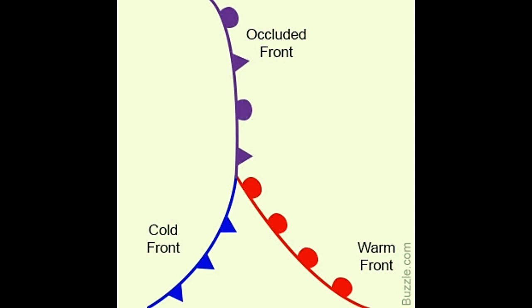How does an occluded front form? Usually an occluded front is formed in areas of depression caused by low pressure. When a cyclone develops behind a warm front, the cold front that was formed behind the warm front moves towards it. As a result of the storm, its speed will be higher than that of the warm front. The air mass behind the cold front is colder when compared with the cool air mass that was ahead of the warm front.